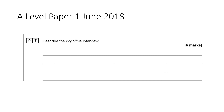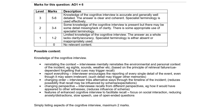Another question is from A Level Paper 1, June 2018: 'Describe the cognitive interview' for six marks. This is all AO1 — just description. Outline the four different techniques and you can include the enhanced cognitive interview. Simply listing the four aspects plus the enhanced cognitive interview gets a maximum of two marks; you need to describe what they are and give examples. For example, with the enhanced cognitive interview: using open-ended questions, slow speech, and reducing anxiety.